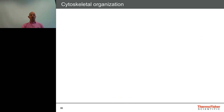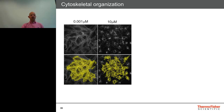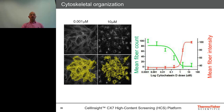In addition to nuclear translocation and spots, we can also look at fibers. Here's an example of a fiber application using cytoskeletal organization. We've labeled these cells with Alexa Fluor phalloidin and treated them with cytochalasin D, which disrupts the actin cytoskeleton. At a low concentration we can still see the presence of fibers within cells, however at higher concentrations you see the collapse of the cytoskeleton as actin microfibers fall apart. The software can look at the number of fibers within cells — which falls as a function of increasing cytochalasin D concentration — as well as mean fiber intensity, where condensation of fibers into small spots reads out as an increase in intensity.